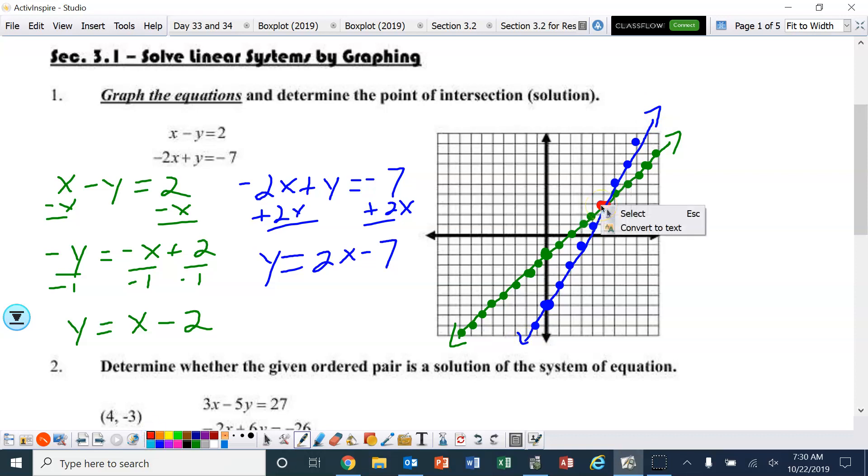But we have the intersection right here. And that intersection looks like it's at 1, 2, 3, 4, 5, 3. So, the solution to this system is 5, 3.